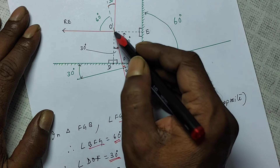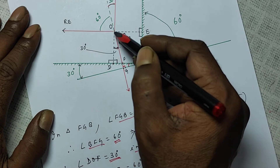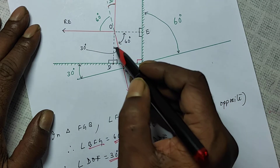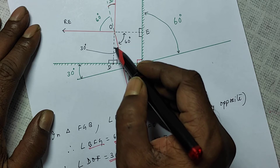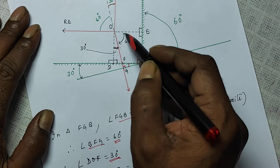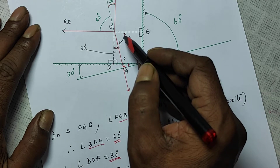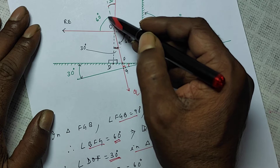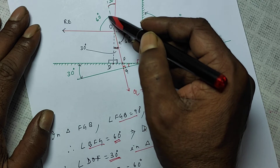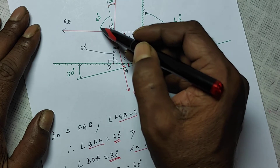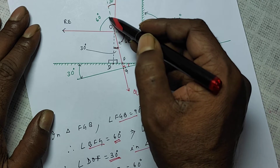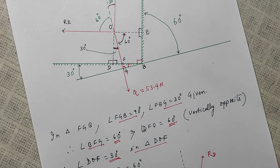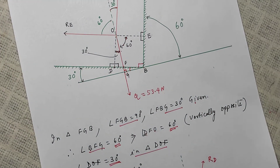At point O, the two black dotted lines make 90 degrees. Since one angle is 60 degrees, the remaining angle is also 60 degrees. The angle vertically opposite to that is also 60 degrees.